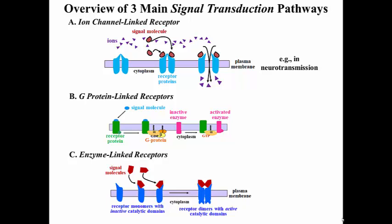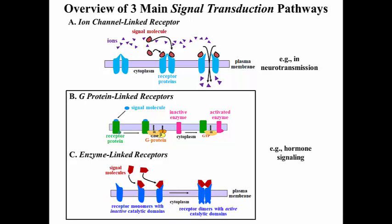The first one is ion channel linked receptors, which are characteristic of neurotransmission, as we've already seen. We're going to focus on signal transduction by G-protein and enzyme linked receptors.